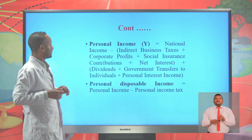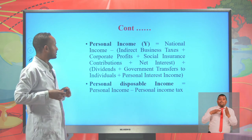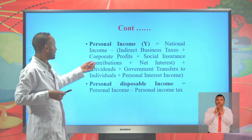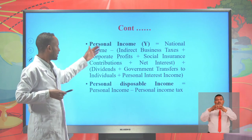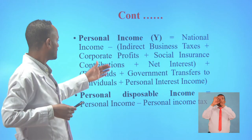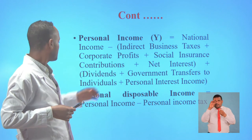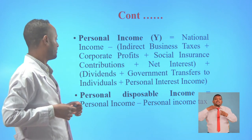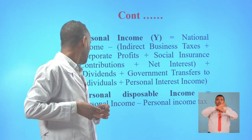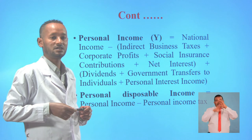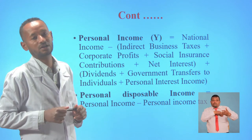The other social account is personal income. Personal income is calculated as national income minus indirect business tax, corporate profits, social insurance contributions, and net interest, then adding dividends, government transfers to individuals, and personal interest income. Finally, personal disposable income equals personal income minus personal income tax — this is the household income left after paying income tax to the government.